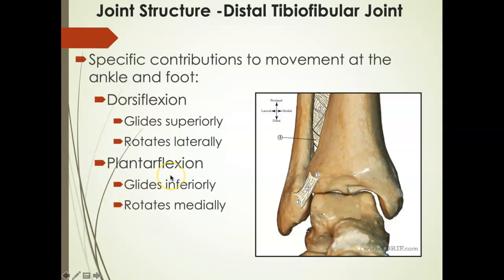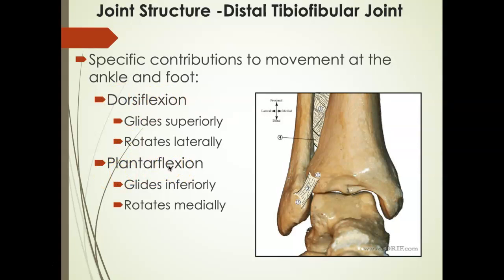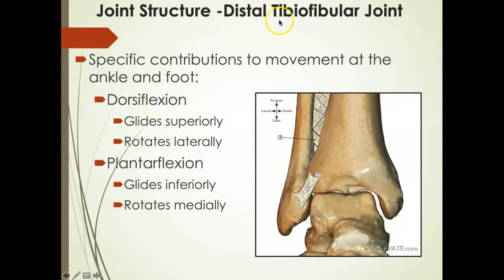The distal tibial-fibular joint is most responsible for assisting with ankle dorsiflexion and plantar flexion. Remember, dorsiflexion and plantar flexion are osteokinematic motions, so they happen as a result of arthrokinematic motions. The arthrokinematic motions that allow dorsiflexion to occur involve the fibula gliding superiorly and rotating laterally. Two things must happen for good dorsiflexion at the distal tibial-fibular joint: the fibula has to glide superiorly and then open up and rotate laterally — that's for maximum dorsiflexion.